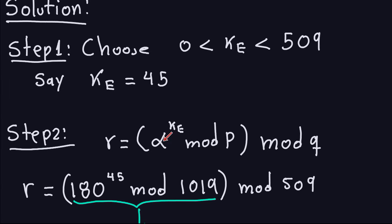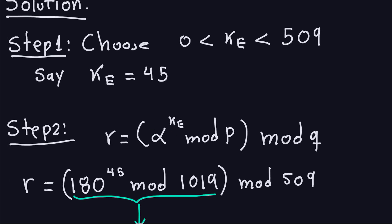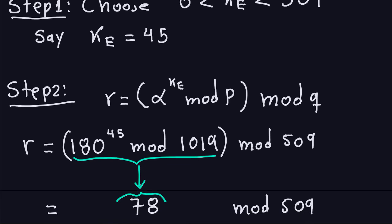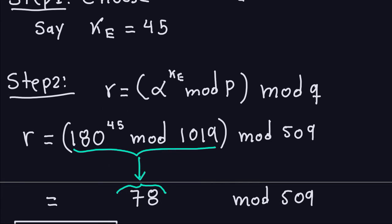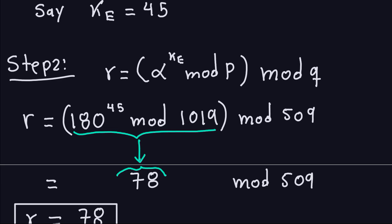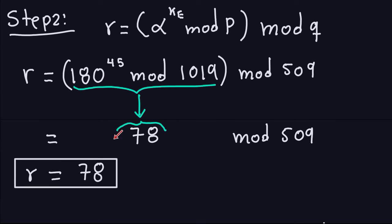R equals Alpha to the ephemeral key, modulo the larger prime, then modulo the smaller prime. Our generator Alpha is 180, the ephemeral key is 45, modulo the larger prime, then modulo 509. Doing this modular exponentiation — using fast exponentiation algorithms — gives 78. Since 78 is smaller than 509, modulo 509 gives 78 again. So R equals 78.